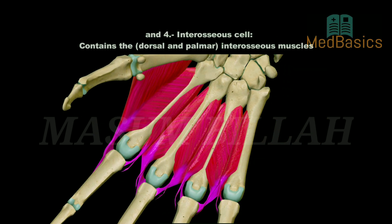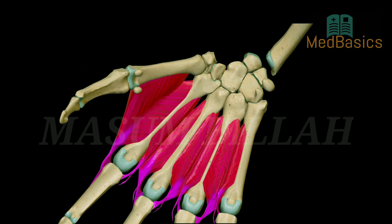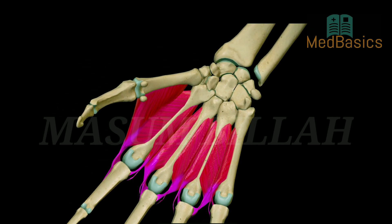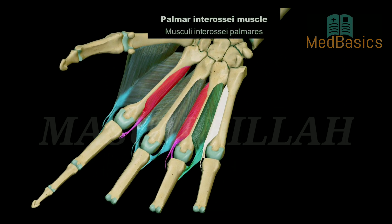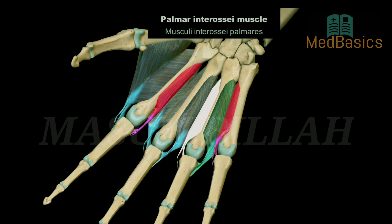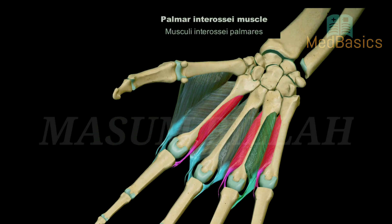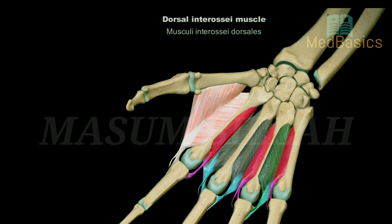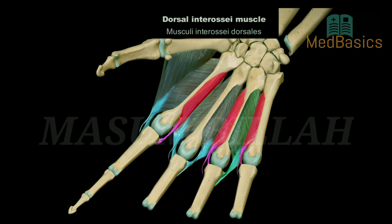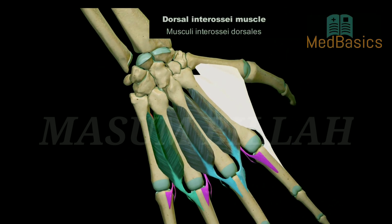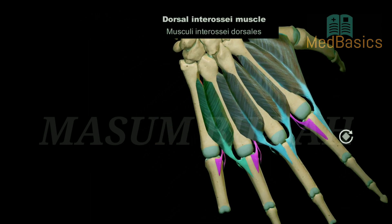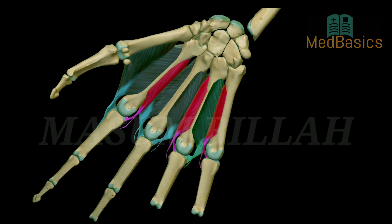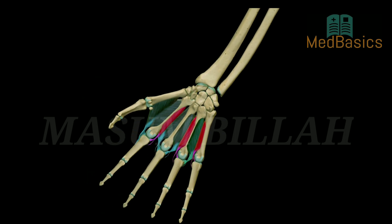Interosseous compartment. This compartment contains the dorsal and palmar interosseous muscles. The interosseous muscles are intrinsic muscles of the hand located between the metacarpals. They consist of three palmar and four dorsal muscles, respectively, and are responsible for finger adduction and abduction.